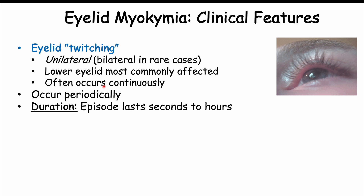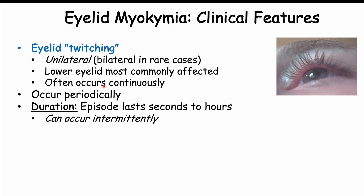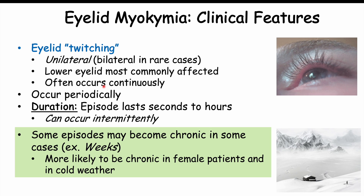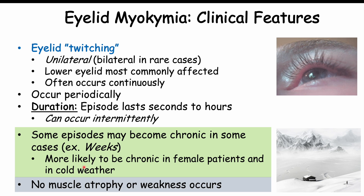The duration of eyelid twitching episodes can last between seconds to hours, and episodes can occur intermittently — twitching for seconds, stopping, then returning for minutes. In some cases episodes can last for weeks, which would be considered chronic eyelid myokymia, and it is more likely to occur in female patients and in cold weather. Importantly, there is no muscle atrophy and no muscle weakness, so patients can open and close their eyes with no issue.